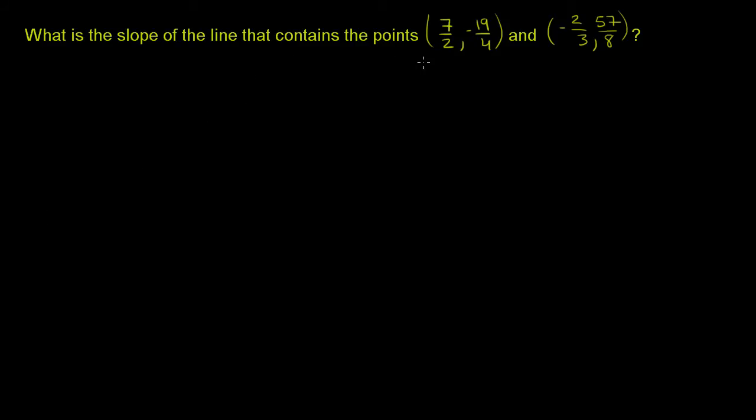What is the slope of the line that contains the points (7/2, -19/4) and (-2/3, 57/8)?